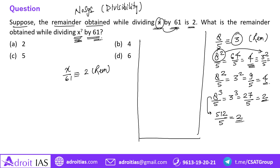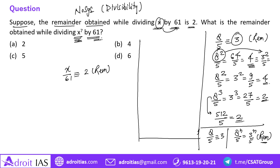So what I want to convey is: if 8 divided by 5 gives you 3 as a remainder, then 8 raised to the power n divided by 5 will give you 3 raised to the power n divided by 5 as a remainder.